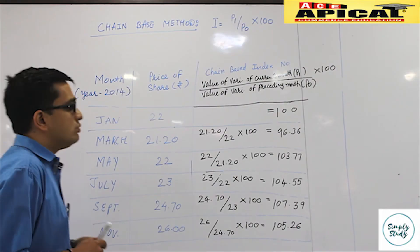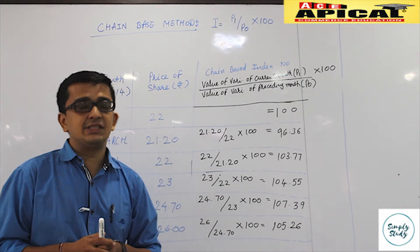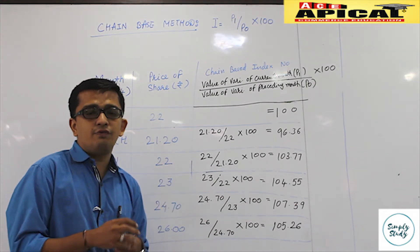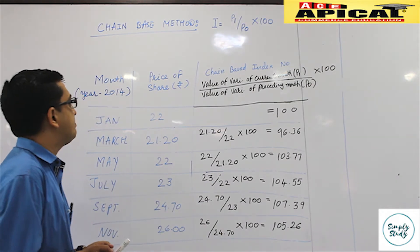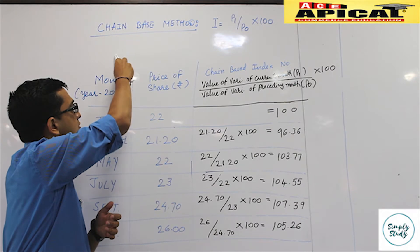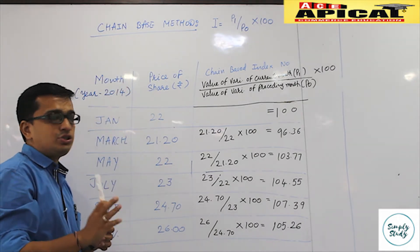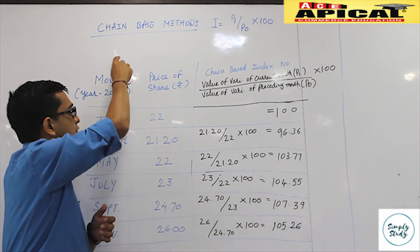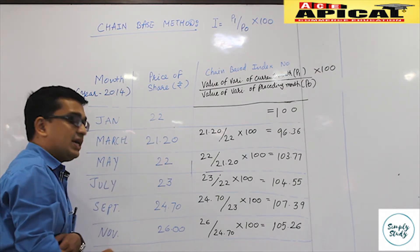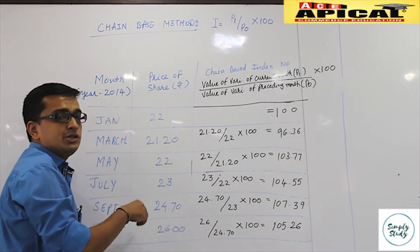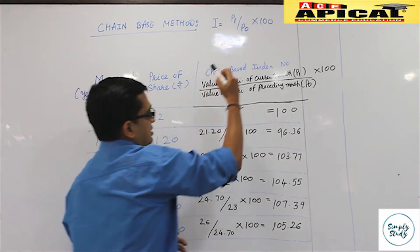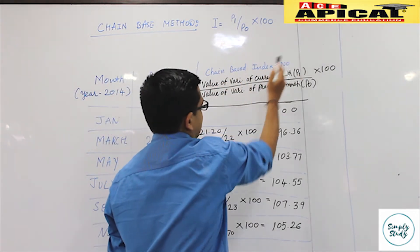We will now put the chain base index number formula into this example. The question given in blue provides prices of shares for particular months: January, March, May, July, September, and November, along with their respective prices. The chain base index number = (value of variable of current year / value of variable of preceding year) × 100.